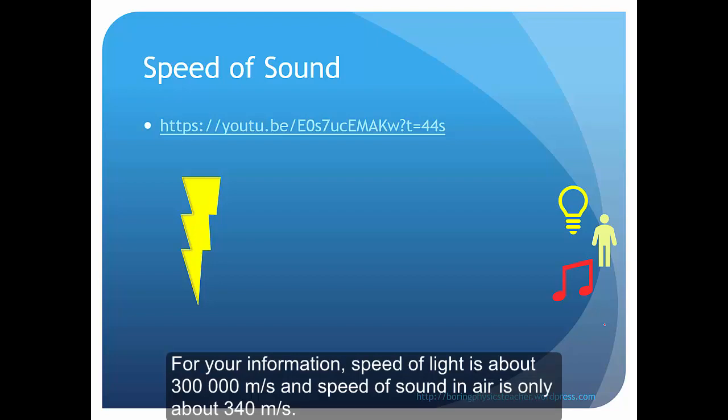For your information, the speed of light is about 300,000 meters per second, but the speed of sound in air is only about 340 meters per second.